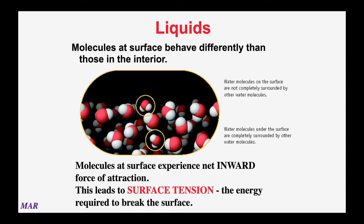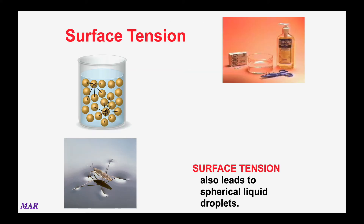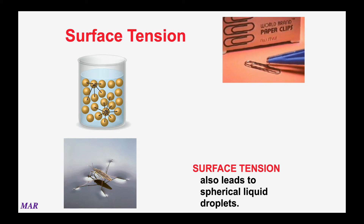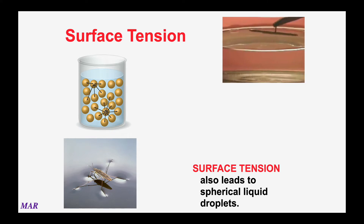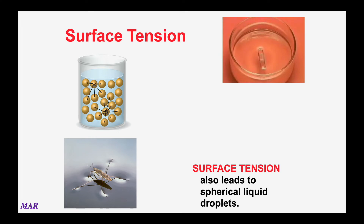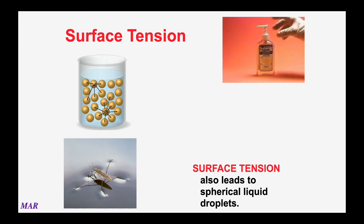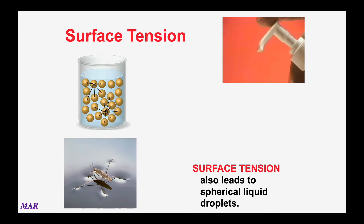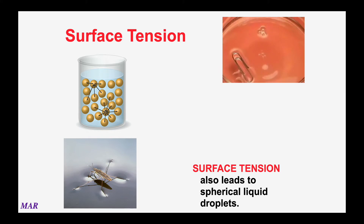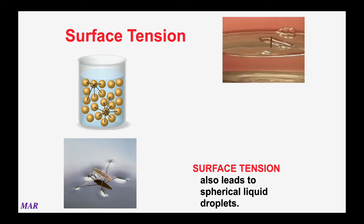This inward force leads to a phenomenon called surface tension, which is the energy required to break the surface of the liquid. Some substances have strong surface tensions and some have weak ones. A paper clip placed carefully on water floats because it isn't heavy enough to break the water's surface tension. By adding a small amount of soap, we reduce the water's surface tension, and the paper clip sinks.